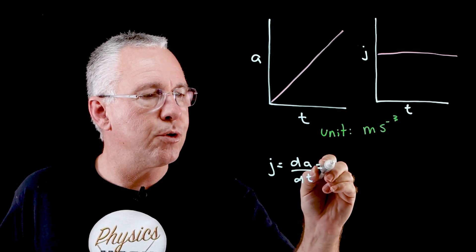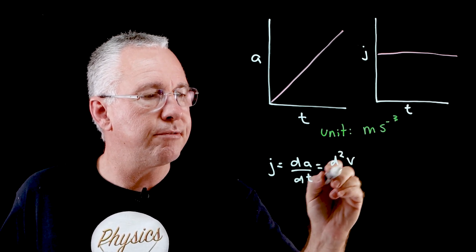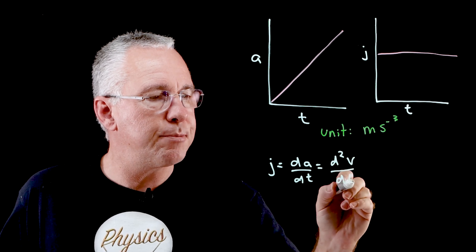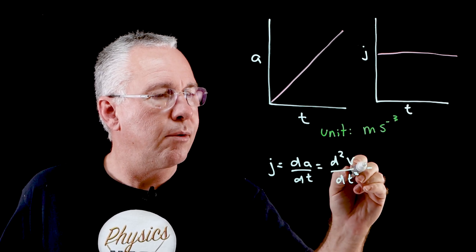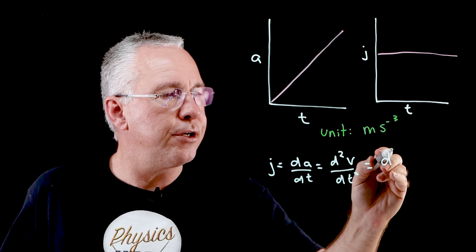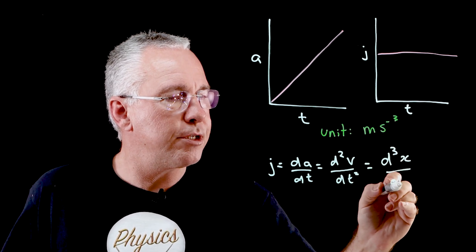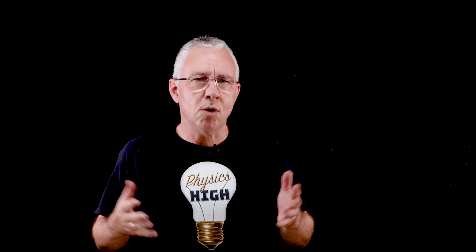So that basically means that the jerk is equal to the derivative of the acceleration with respect to time, which of course means we have the second derivative of the velocity with respect to time, which is therefore the third derivative of the displacement with respect to time.